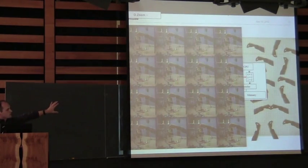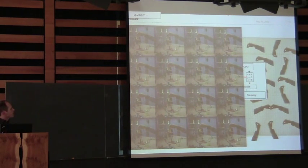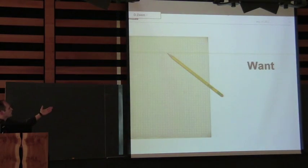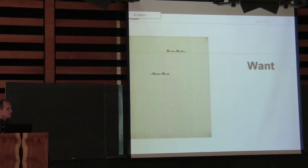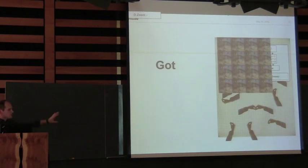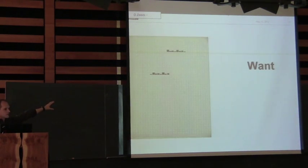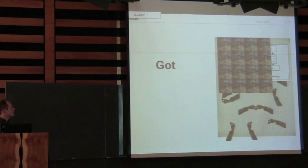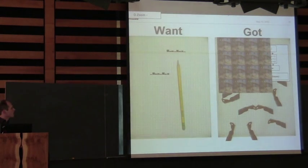Basically, this is the memory model in reality — it's not just a scrap of graph paper. So this is the memory model we want: nice and simple, use one pencil. And this is the memory model that we have. We want this because it's understandable — you don't have to worry about what happened between steps. But this is what we actually have.